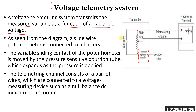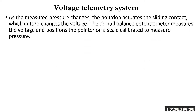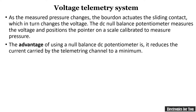When the pressure is applied, this Bordon tube will expand and therefore the slide wire will change, which will change the output voltage. This output voltage is directly proportional to the pressure, and therefore this voltage telemetry system can be used for the measurement of pressure.